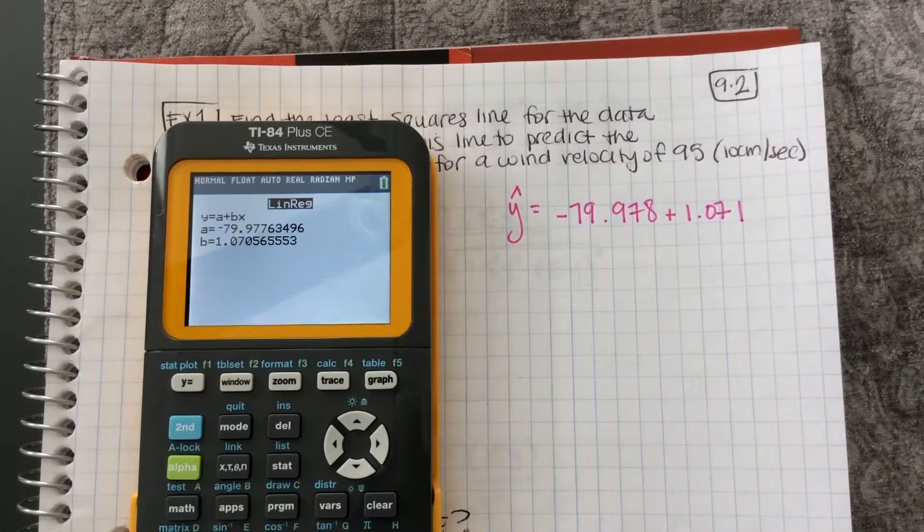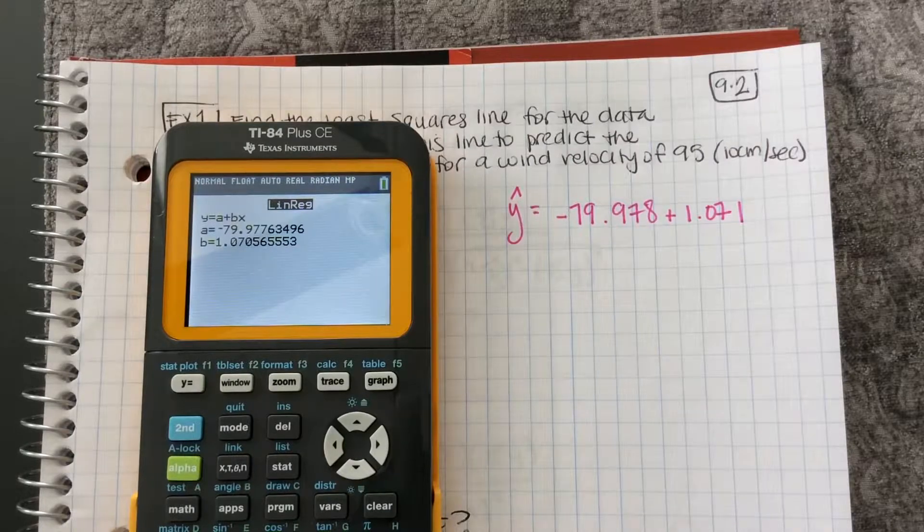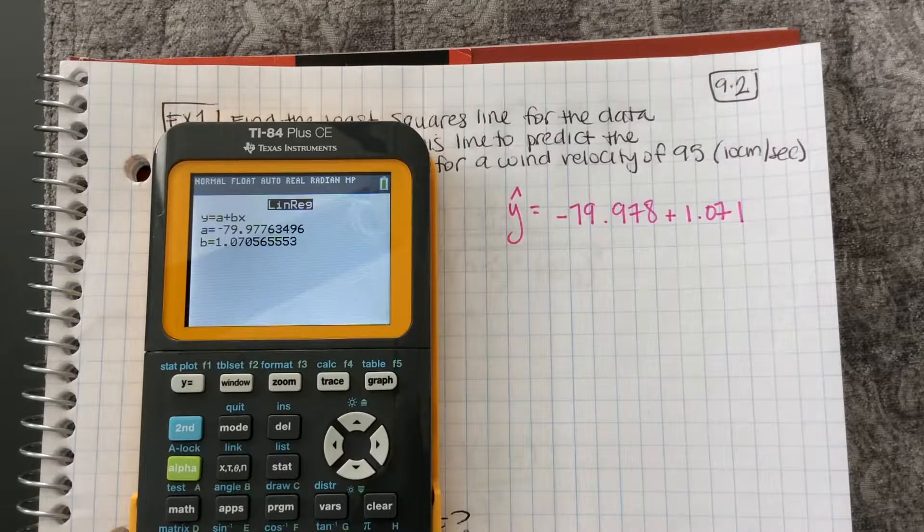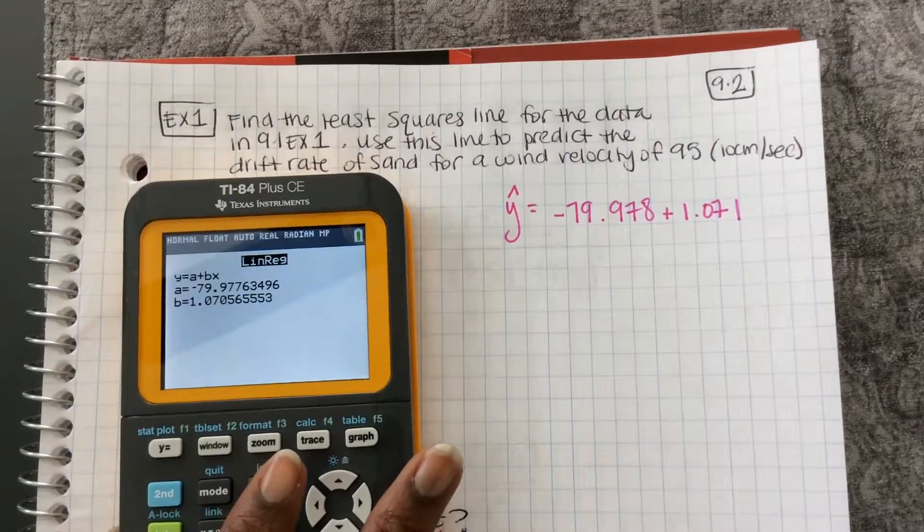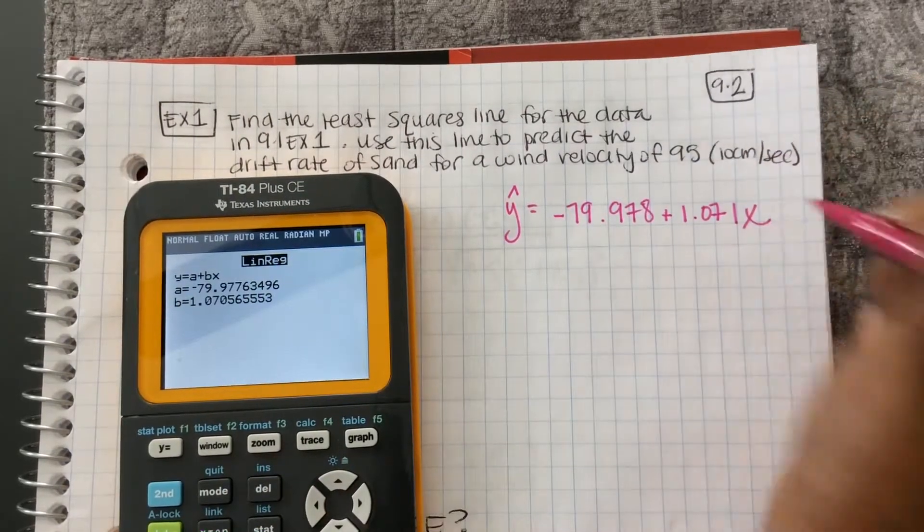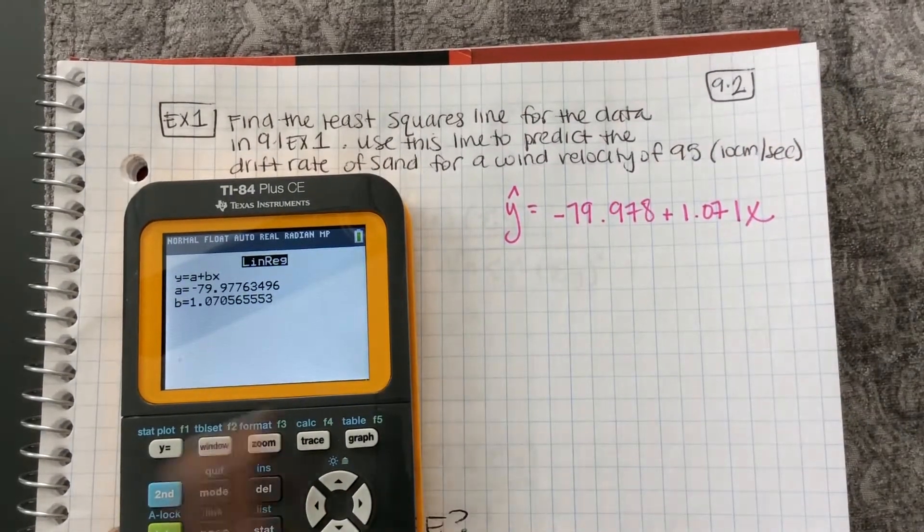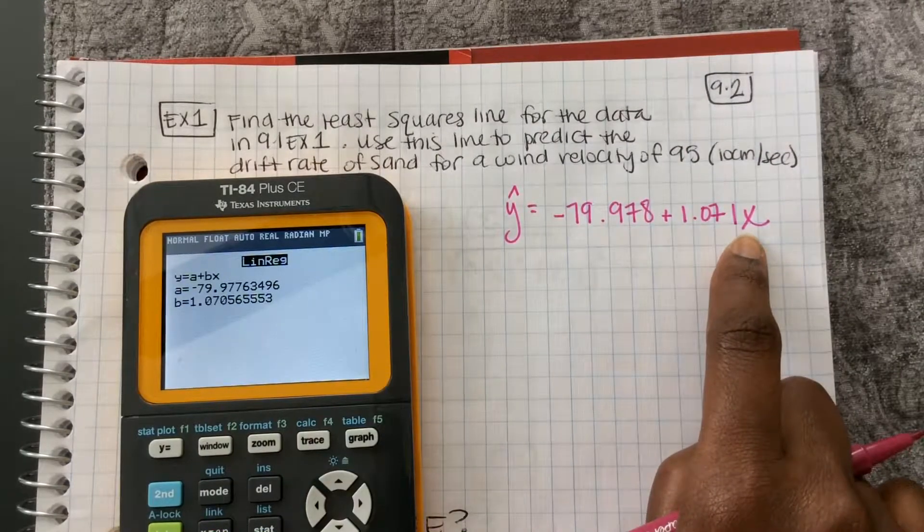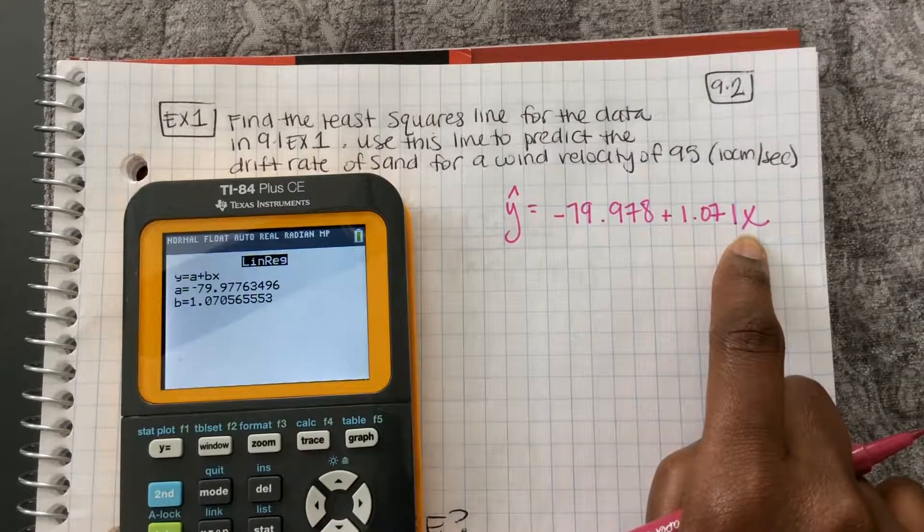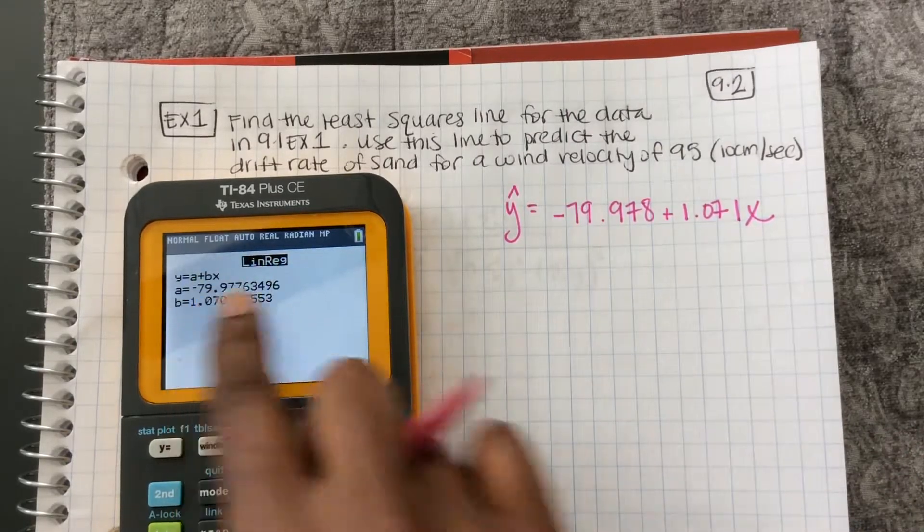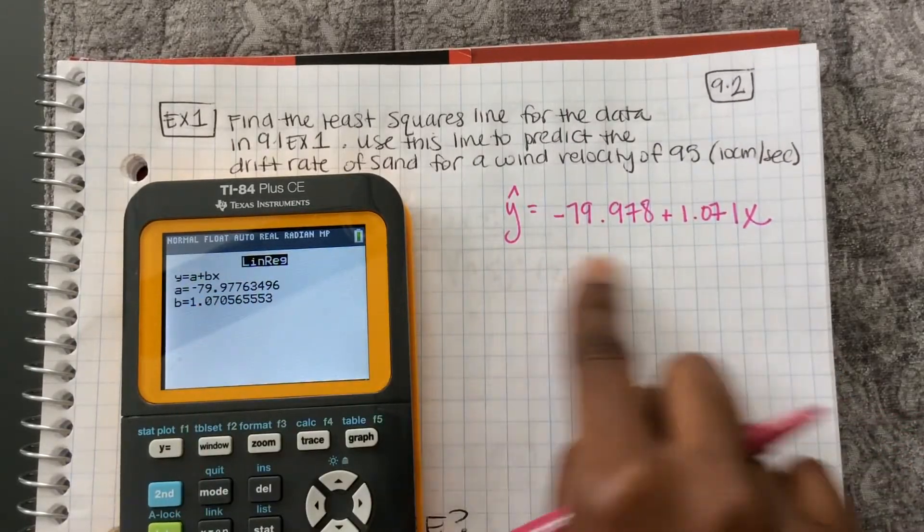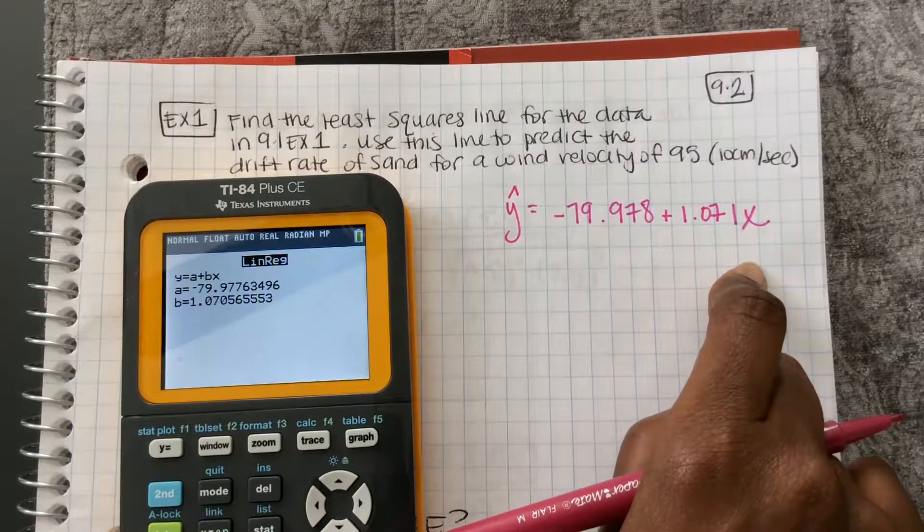So now what we want to do is to determine the drift rate for wind velocity of 95. So that means I'm going to plug 95 in for x. But I want to plug it in to my equation that has all of these decimals, not just this rounded decimal. It will give me a more exact answer.